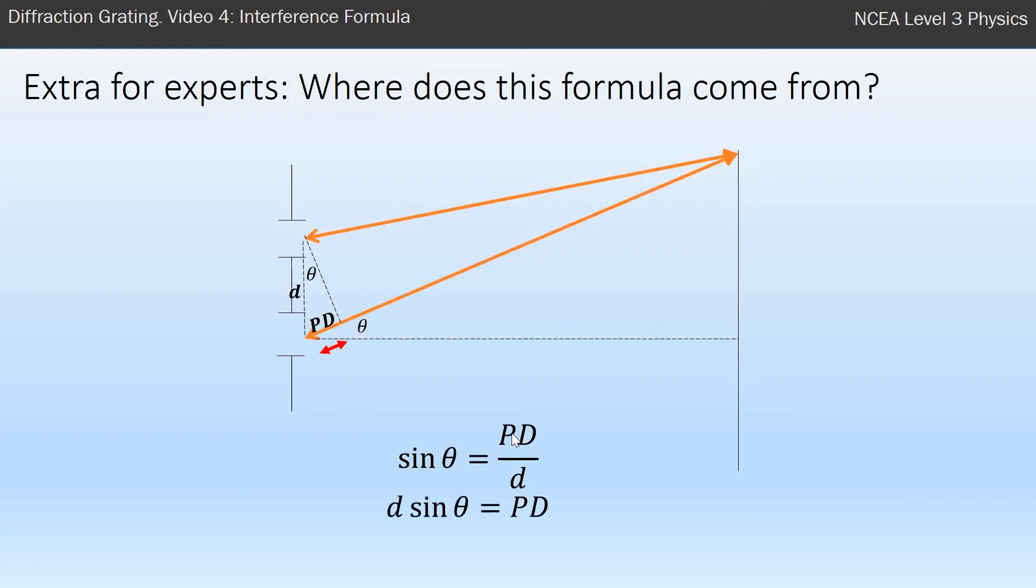We move the d to the left-hand side, and remember path difference leads to constructive interference if it's a whole number of wavelengths, and that's where we get n lambda. So n being a whole number, zero, one, two, three, times wavelengths, and that's where that formula comes from.